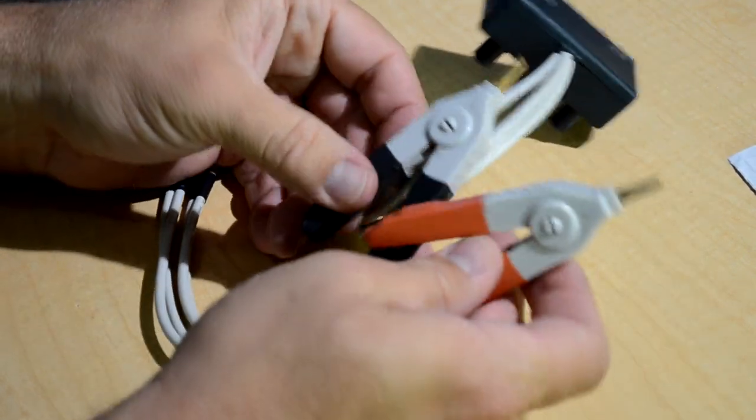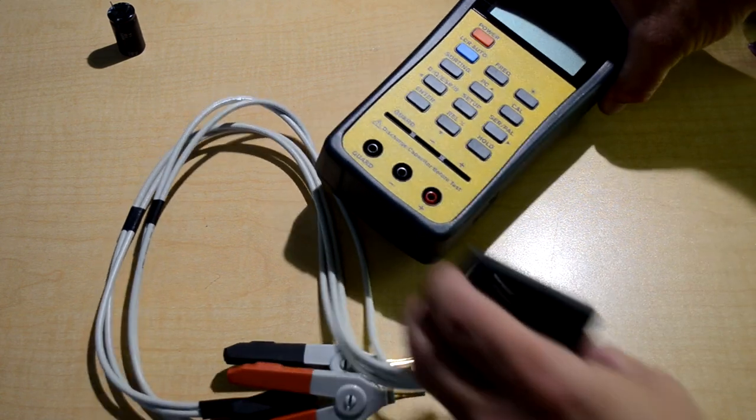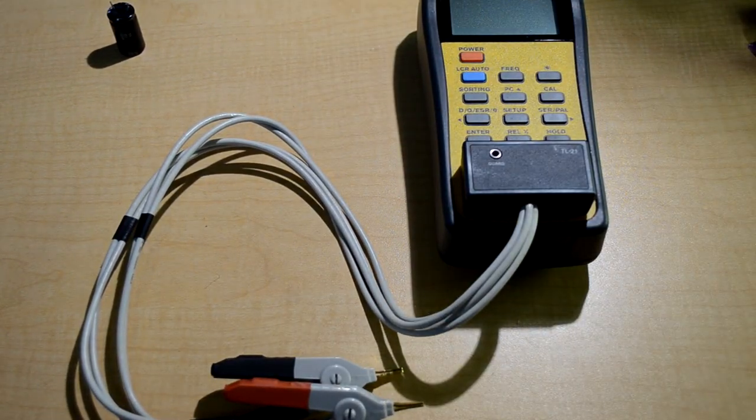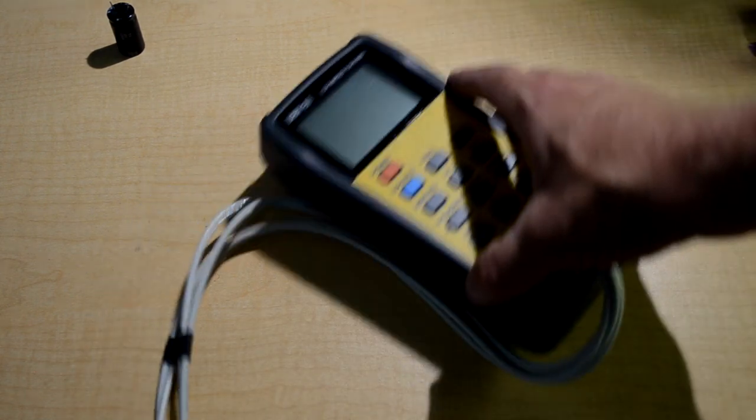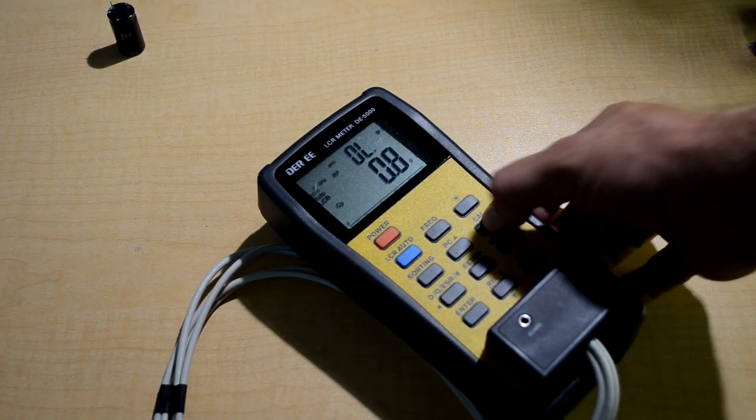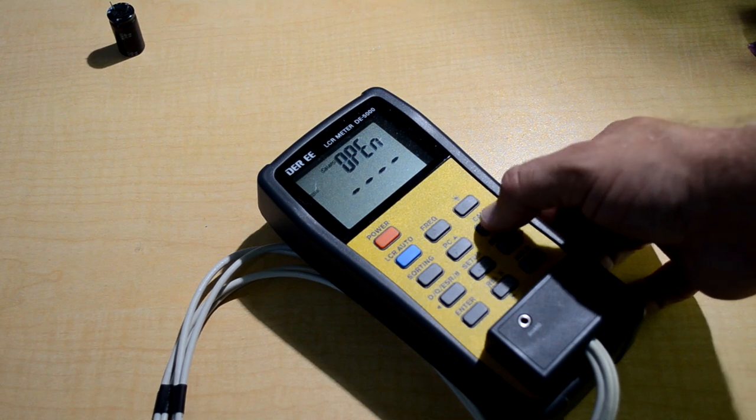So now we've got everything tested or put back together and we really just need to run a test and make sure that our new cables are checking out and will work for what we want to do. So I've got the same capacitor as before and we'll run a check on that capacitor. First, I need to show you how to calibrate your meter because we definitely need to do that now that we've changed the cables.